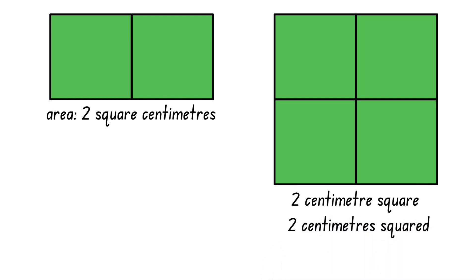A two centimetre square or two centimetres squared means we have a square where each dimension is two centimetres long.